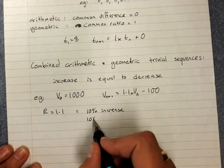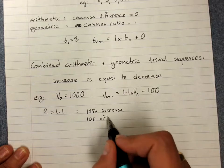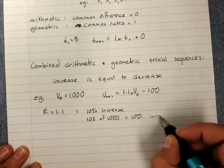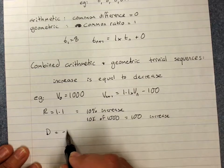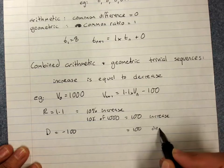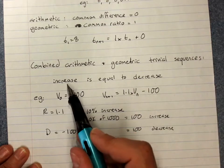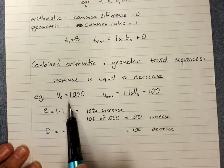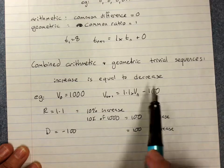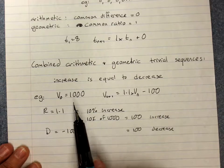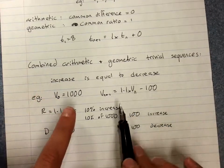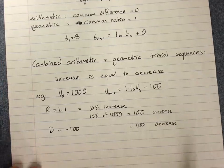A common ratio of 1.1 is a 10% increase. 10% of the starting term of 1000 is 100, so that's a 100 increase. D is minus 100, so that's a 100 decrease. When the increase is equal to the decrease from that first term, it won't go anywhere — it will keep being 1000, 1000, 1000. So if the increase and decrease are the same, we've got a trivial sequence.